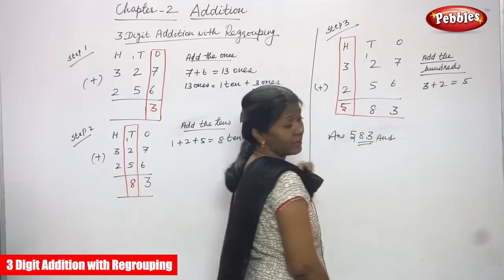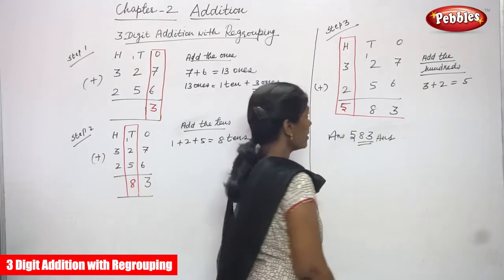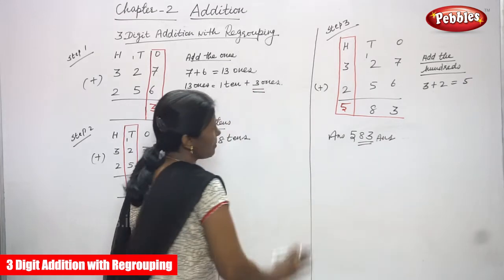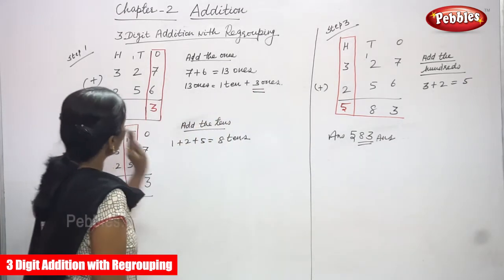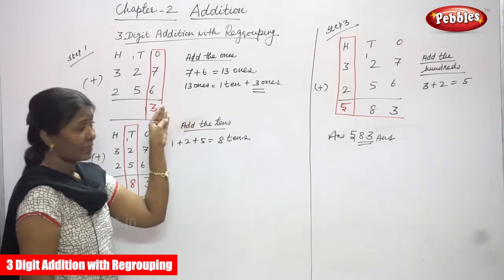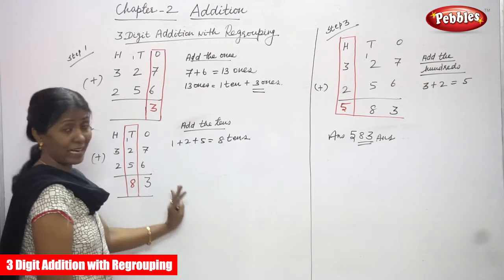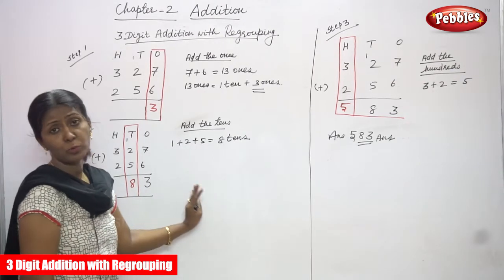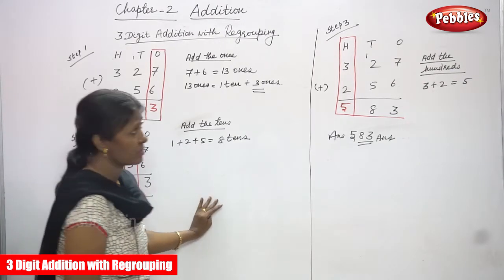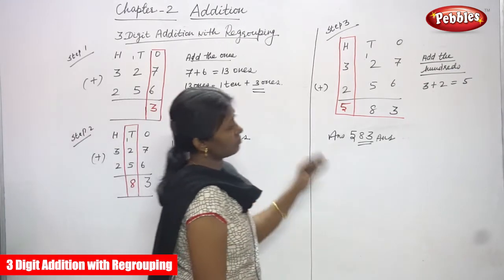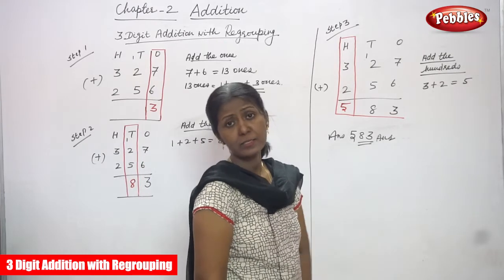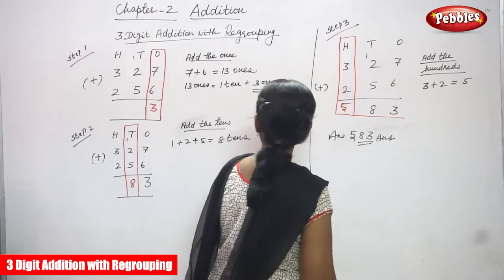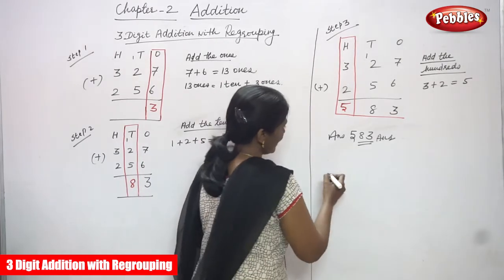So 583 is the right answer. This is the regrouping method — step one: add the ones; step two: add the tens; step three: add the hundreds. The final answer is 583. Now I'll also teach you the normal addition method.